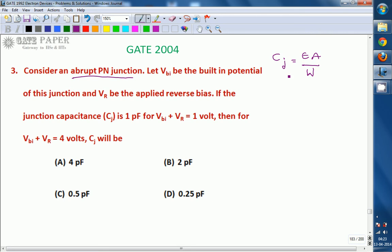Under reverse bias, PN junction acts as parallel plate capacitor with P side as one plate, N side as other plate, depletion region as the dielectric material between the plates.